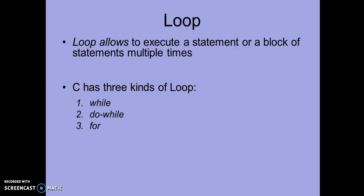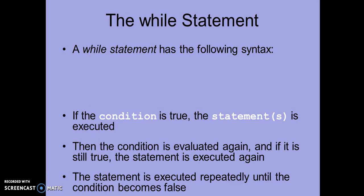Good morning. Today we will discuss loops. Let's start with the while loop. A loop is basically used when we have to execute a group of statements or a block of statements several times. C programs support three types of loops: while loop, do-while, and for loop. Today we will have a look at the while loop.